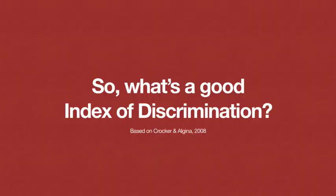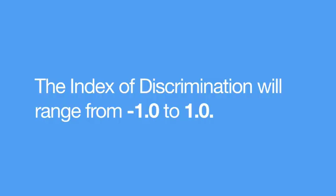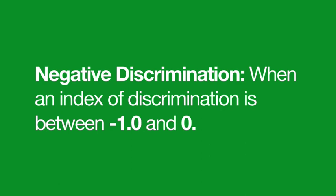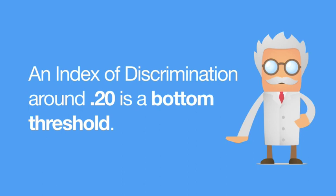Now, you might be asking: what is a good index of discrimination? Remember, as we talked about for item difficulty, you'll never pin anyone down into telling you there are definite cutoffs, but since we're new to the item analysis game, let's start off with some general rules of thumb. Your number is going to range from negative 1 to positive 1, but we're really only interested in positive numbers. Anything lower than 0 should be rewritten or discarded. Items with negative numbers, like minus 0.13, are said to be negatively discriminating. That means that the lower performers are doing better on the question than the high performers, which is not what we want to see.